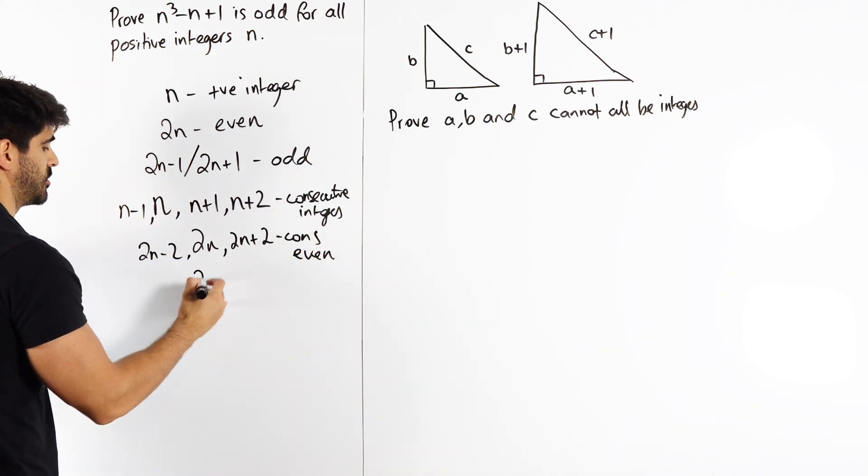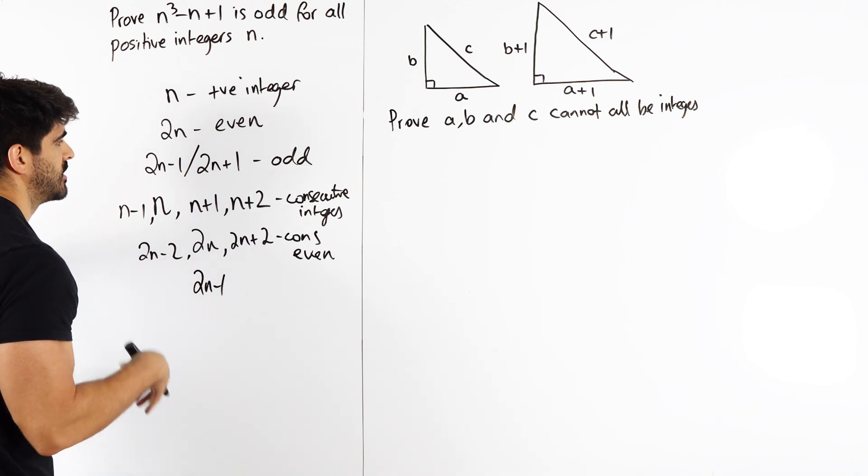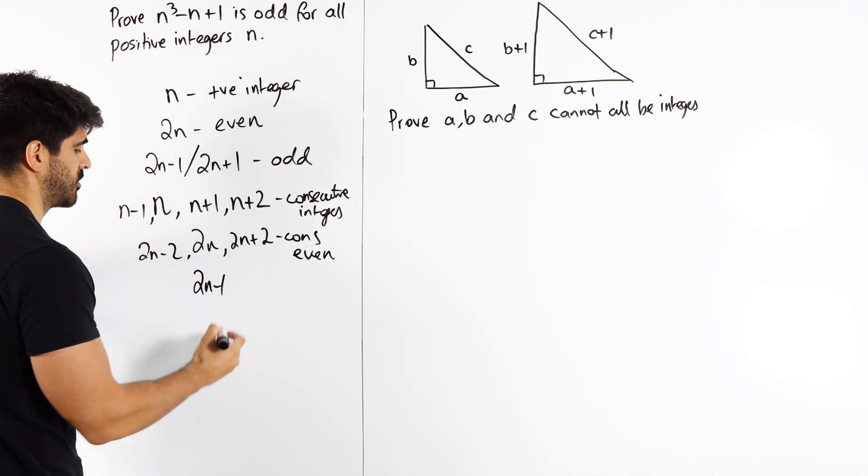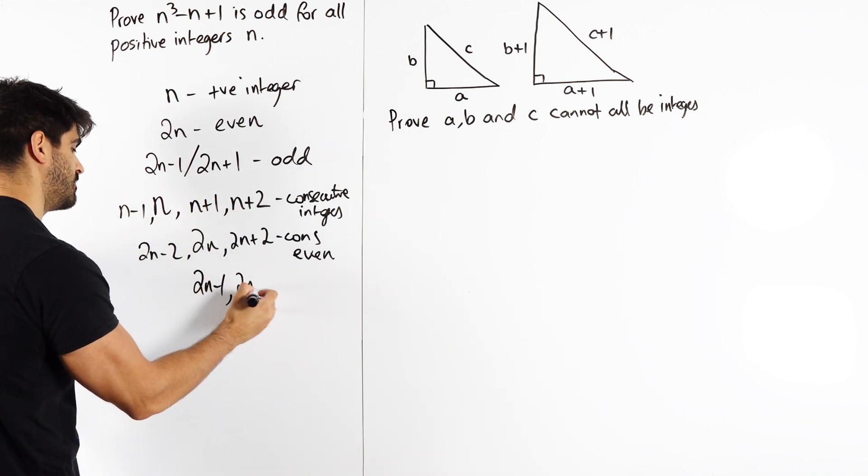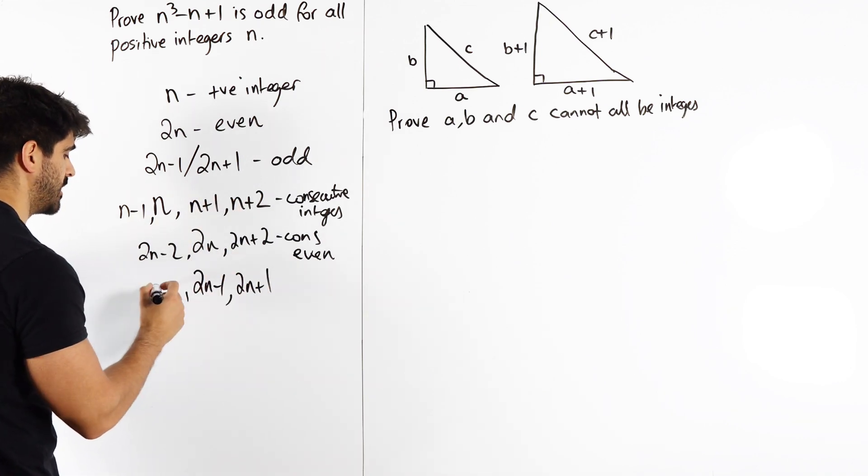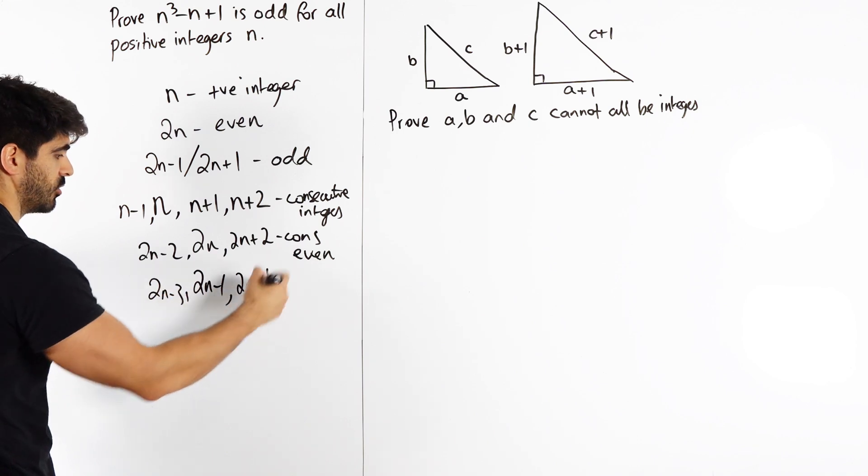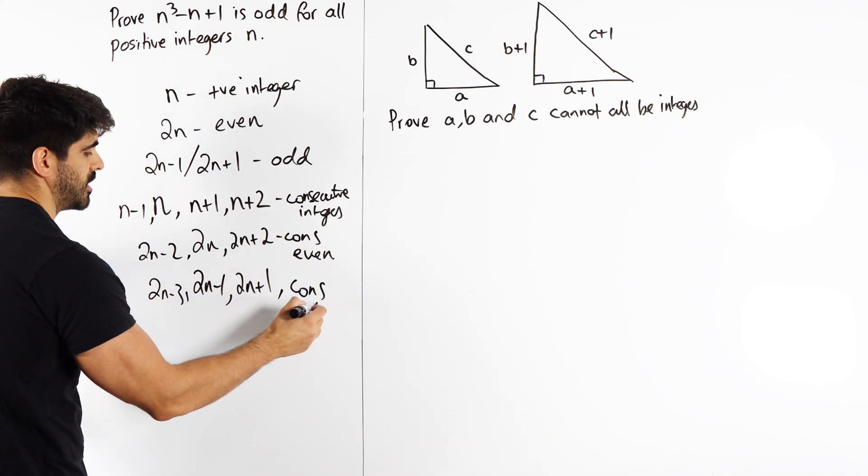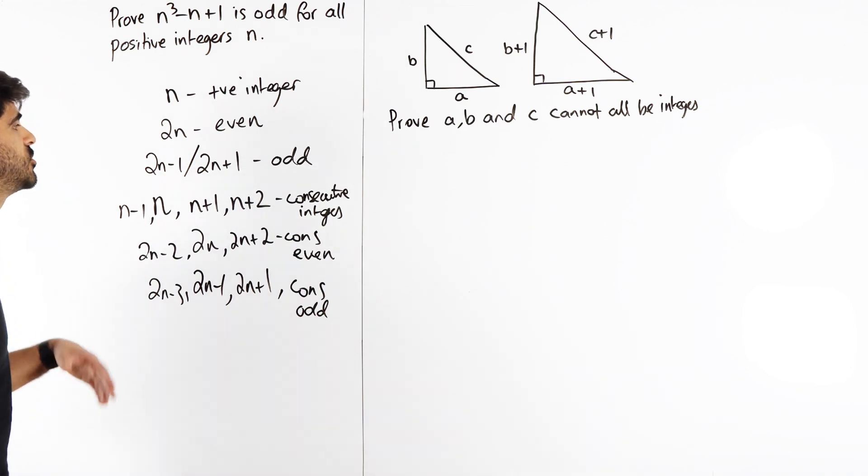How about odds? Well, if we have 2n - 1, the next odd number would be 2 away: 3, 5, 7, etc., which would be 2n + 1. Then we can go the other way: 2n - 3, or that way 2n + 3. These are consecutive odd numbers. So these are the main ones you need to be familiar with at GCSE Maths.